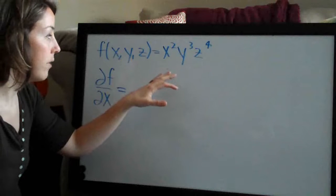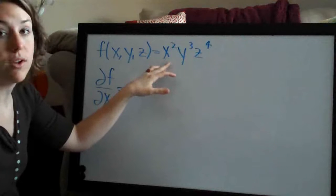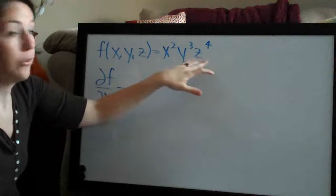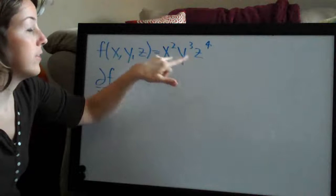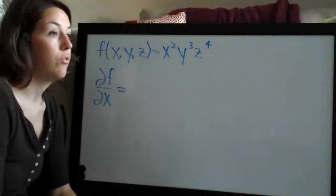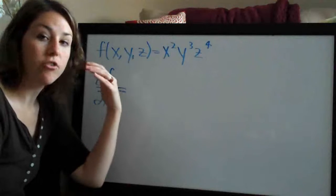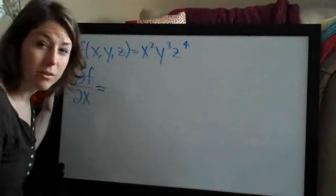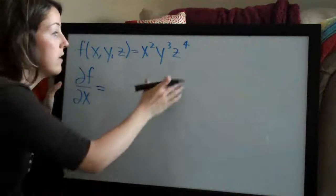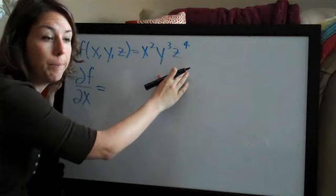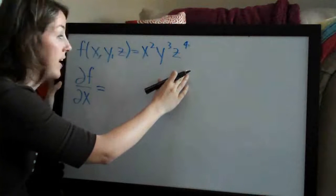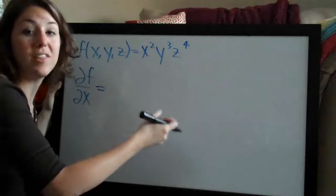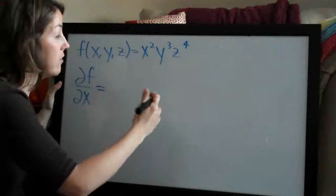Looking at x — the way that we take the partial derivative with respect to x while still having these other variables in the equation is we treat the other variables like they're constants. What I like to do, just to make it really obvious because sometimes it's hard to understand how to hold those constants, especially when you're first starting out, is actually put a constant in there for those numbers, then simplify the equation, and then take the partial derivative so I can see it.